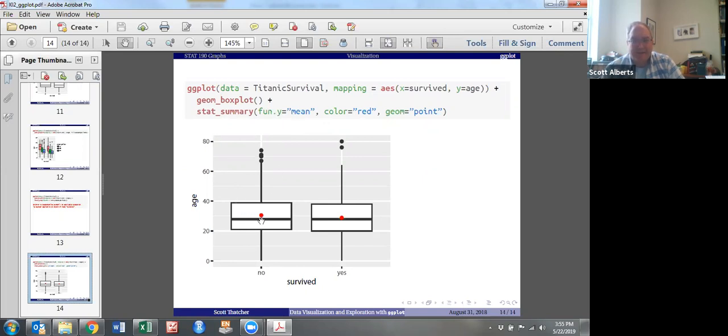And now we can color that mean as red and we're going to use a point to show it. So now we have our box plot and now we've put a dot with the mean right there on it.